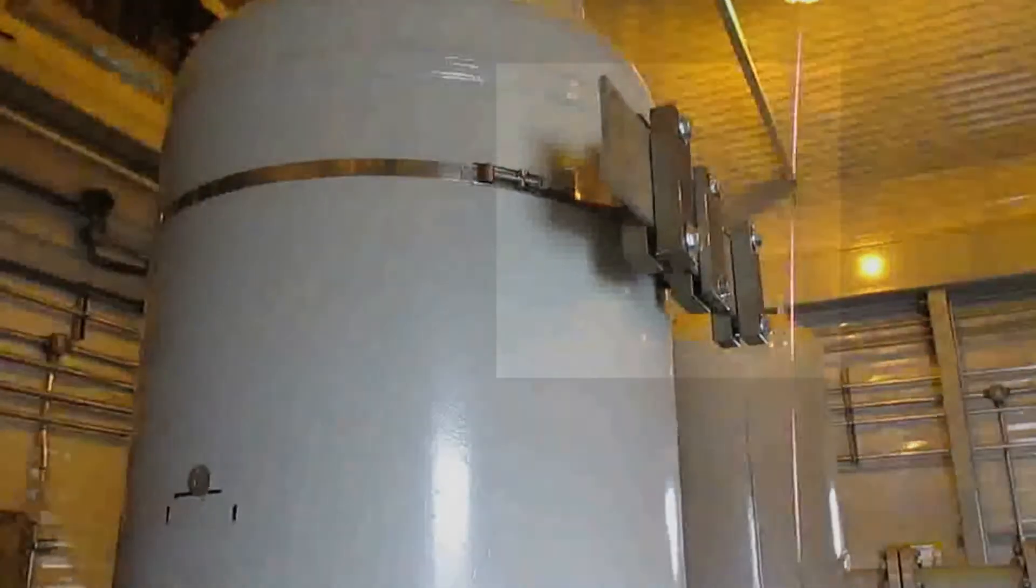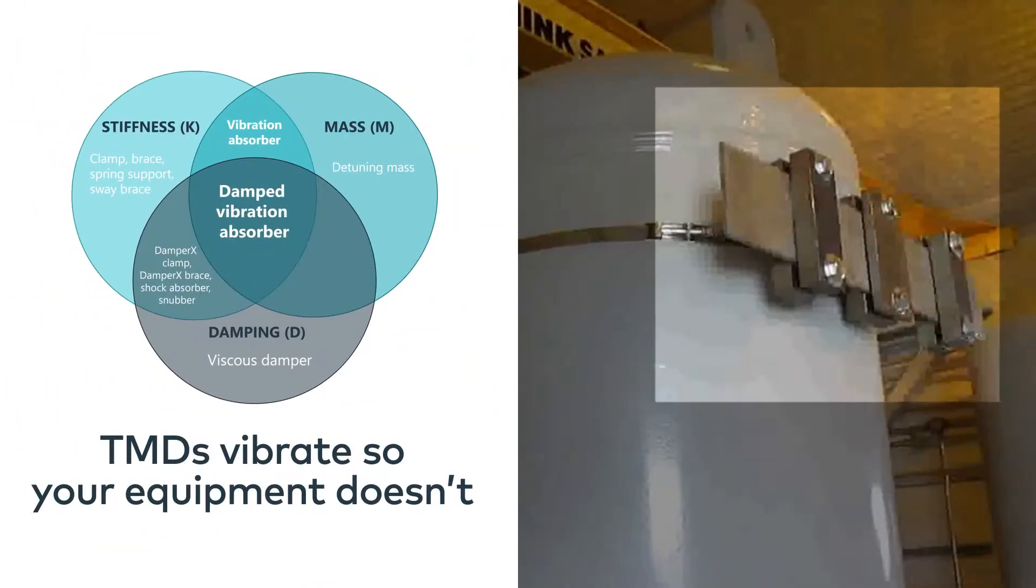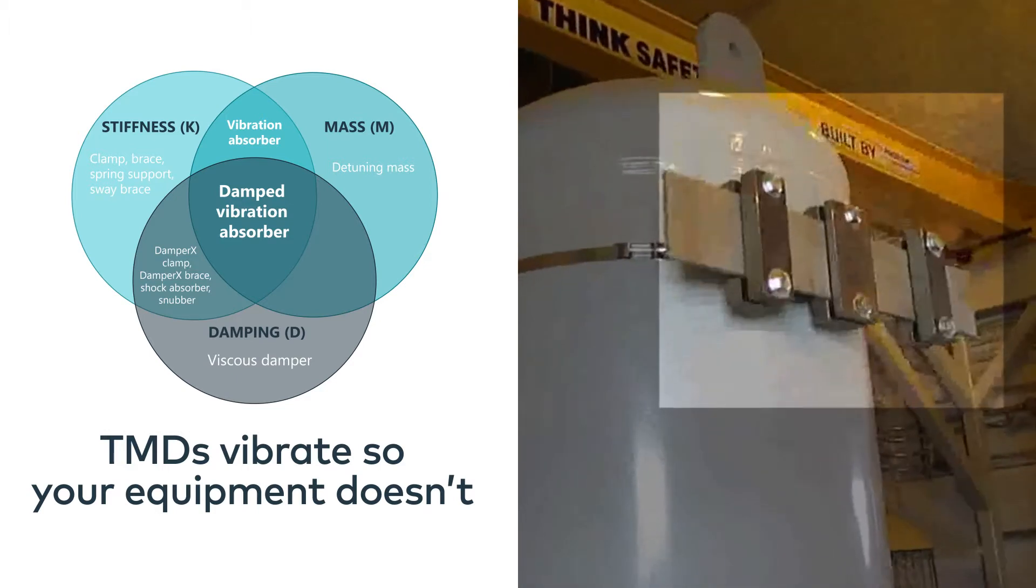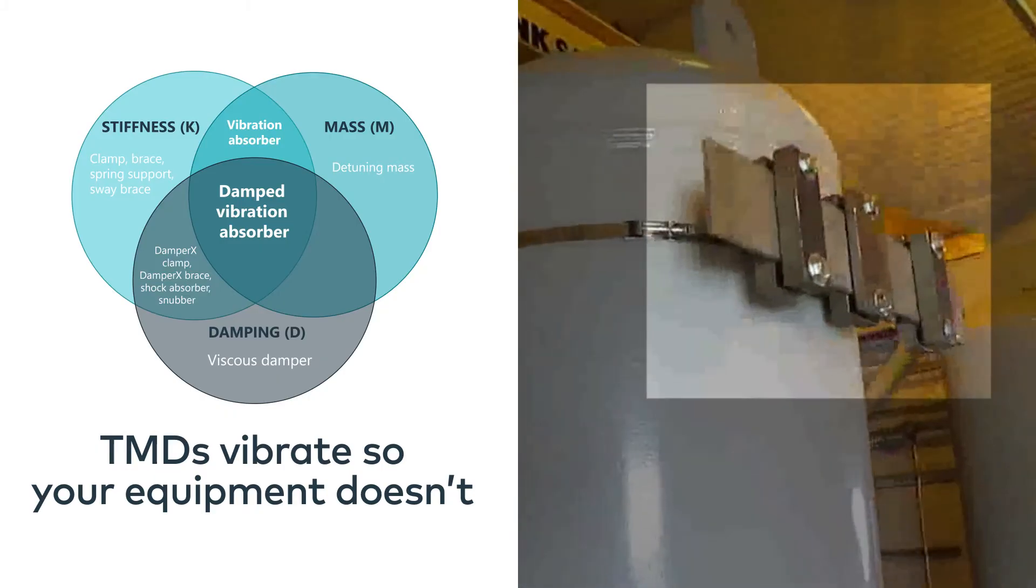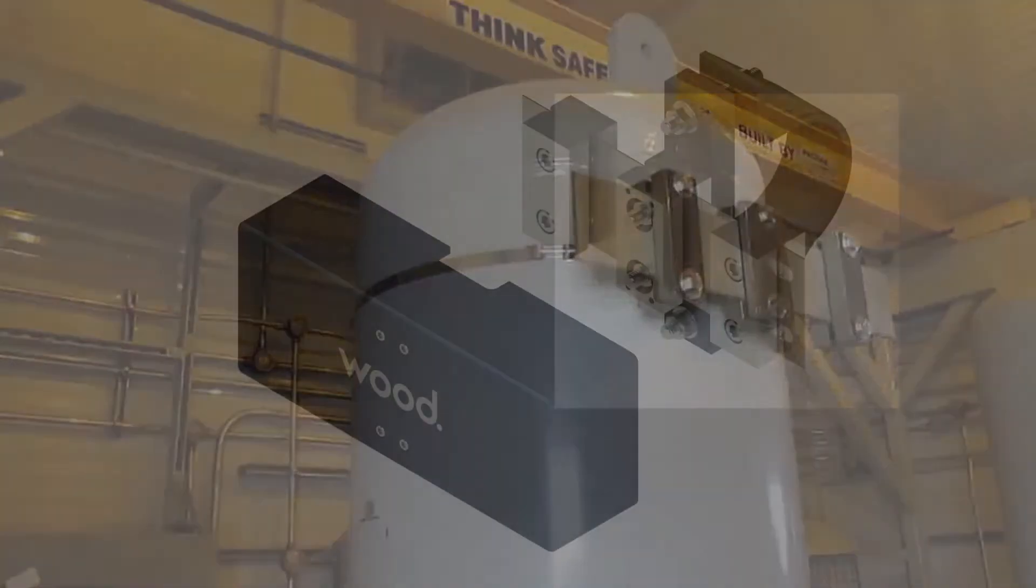A TMD is simply a combination of mass, stiffness, and damping that is optimized for a particular mechanical system. The mass and stiffness of the TMD serve to redirect the vibratory energy away from the base system, and the damping burns that energy off, ensuring long working life for your equipment and peace of mind for your personnel.